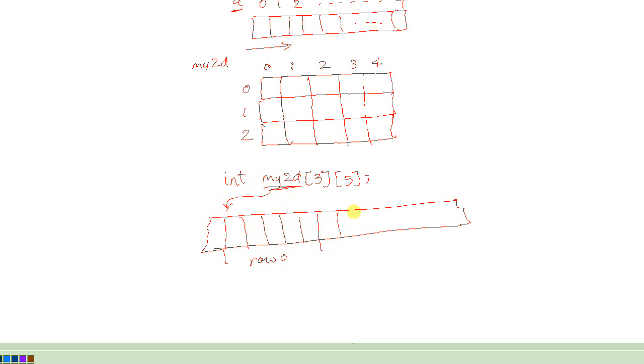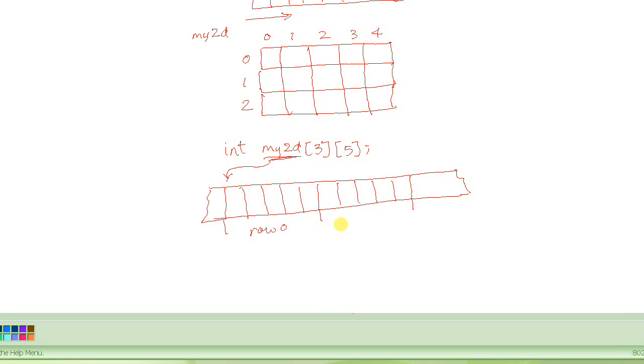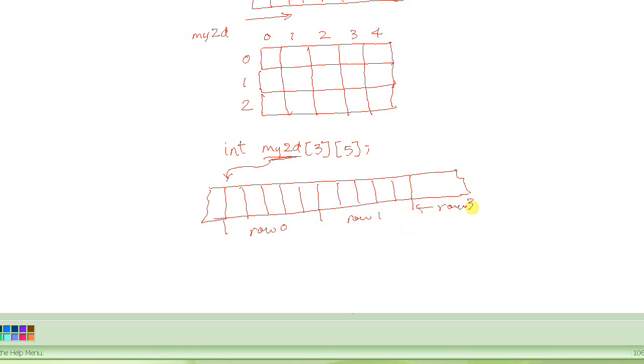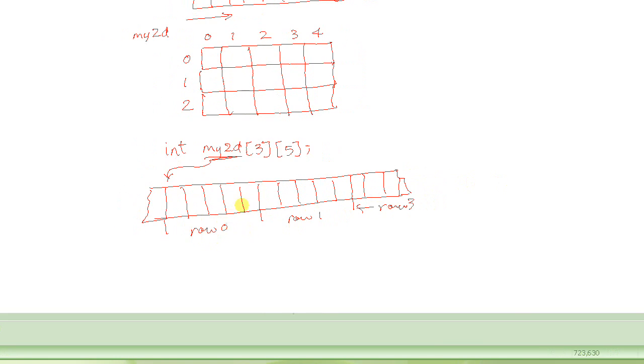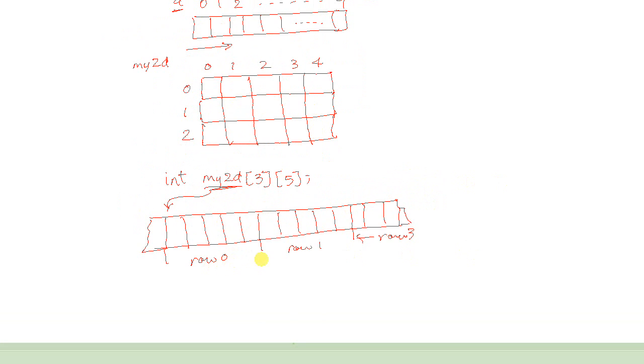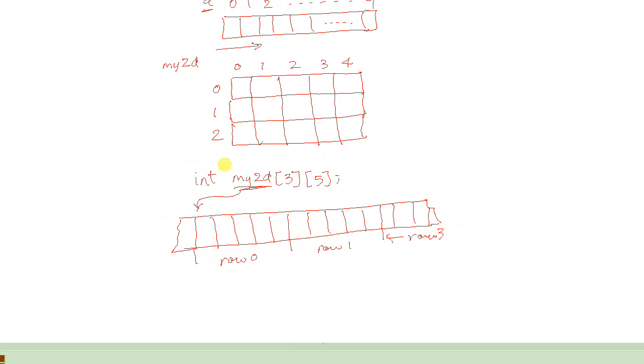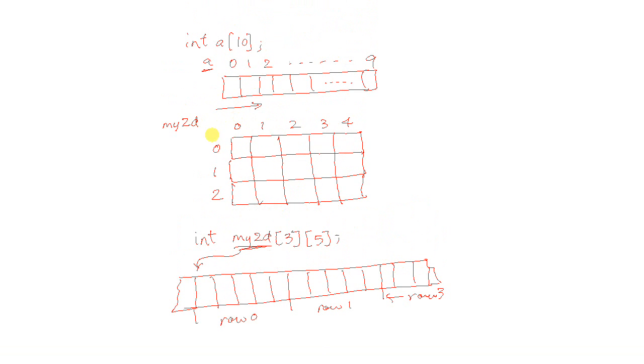And then, the second row comes into picture, or gets stored. The five elements of the second row. That's row number 1. And then, the third row, row 3. So, this is how compiler actually ends up storing this two-dimensional array into one-dimensional memory. That's outside the point. We will know why this is important when we will start doing pointers to two-dimensional arrays. But, for now, this is essentially what it is.